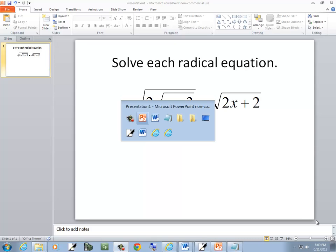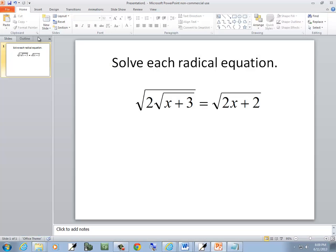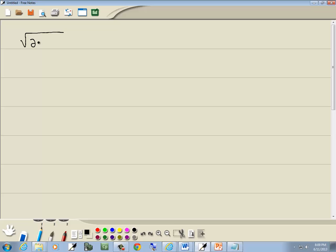Let's solve this radical equation. We get the square root of 2 square root of x plus 3 equals square root of 2x plus 2. Our first step is to get a radical by itself. And actually we have a radical by itself on both sides, because we've got a single radical equal to a single radical.